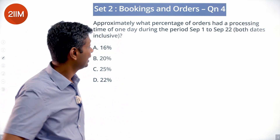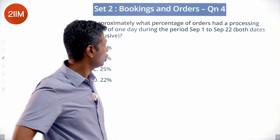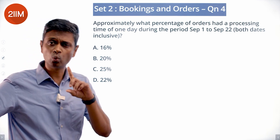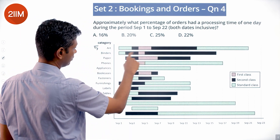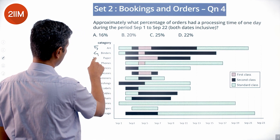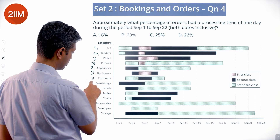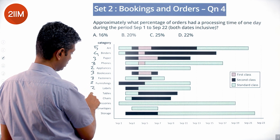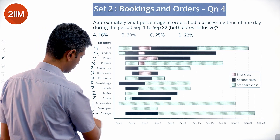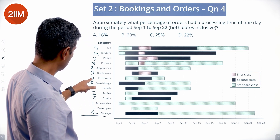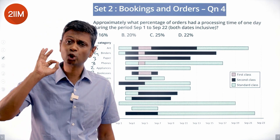Final question: approximately what percentage of orders had a processing time of one day during September 1 to September 22, both inclusive? First, let's count total orders: art had 5, binders 4, paper 3, phones 3, appliances 2, bookcases 3, fasteners 3, furniture 2, furnishings 2, labels 2, tables 2, chairs 2, accessories 1, envelopes 1, storage 2. Adding these up gives 35 total orders.